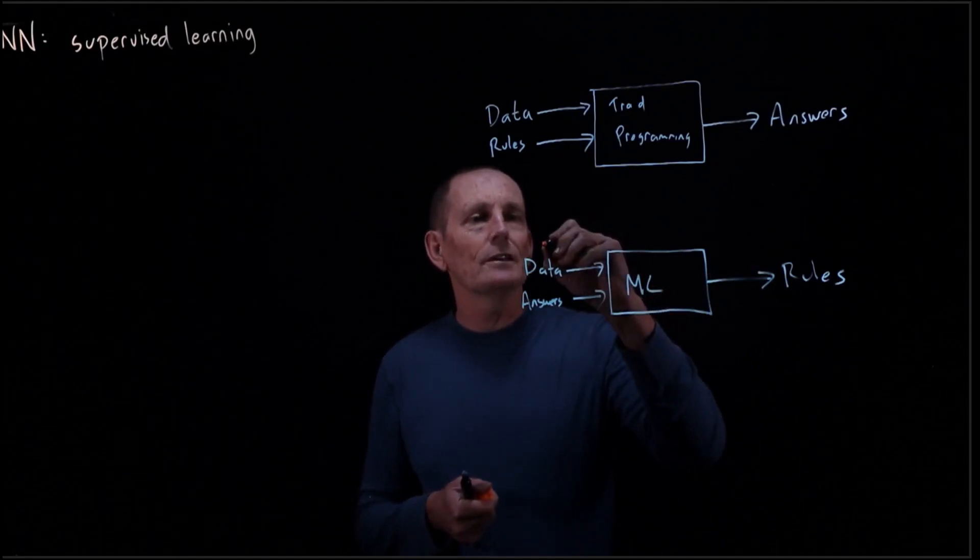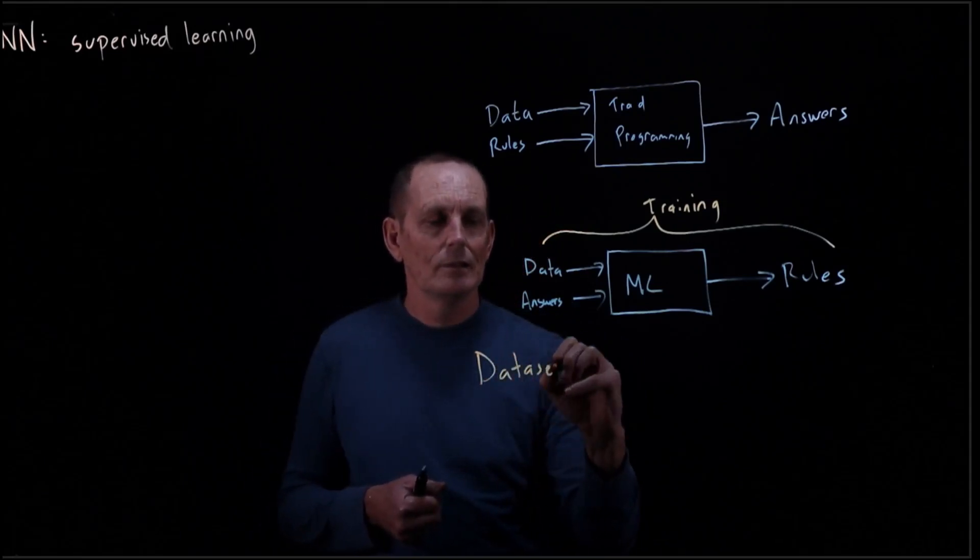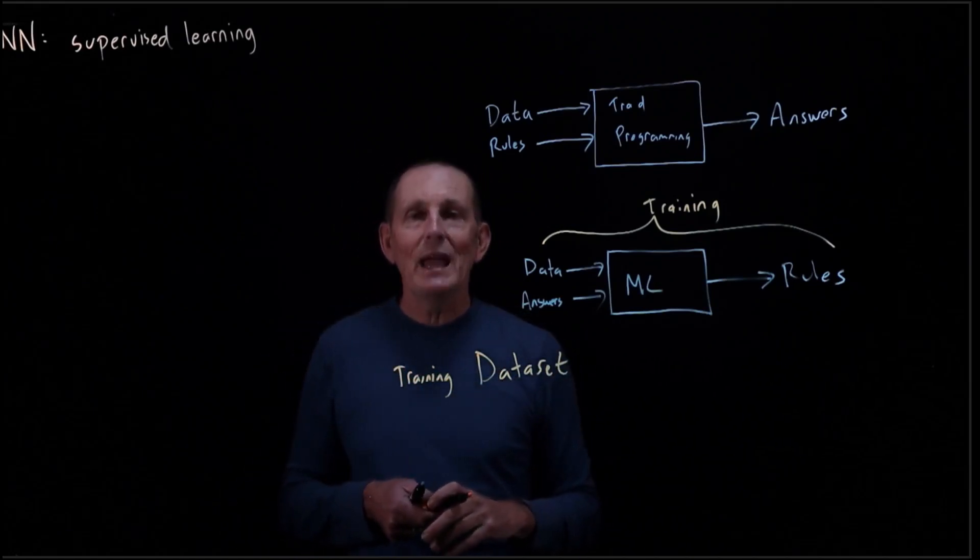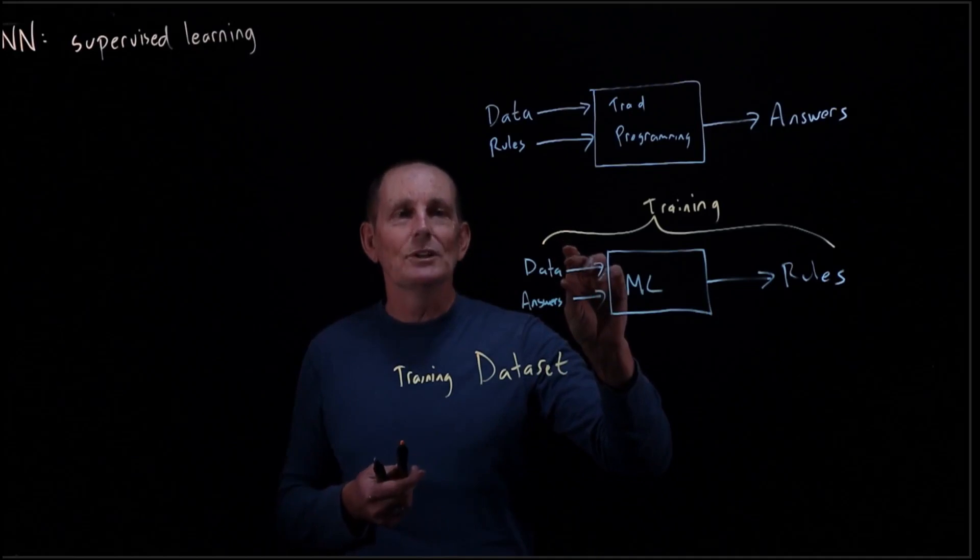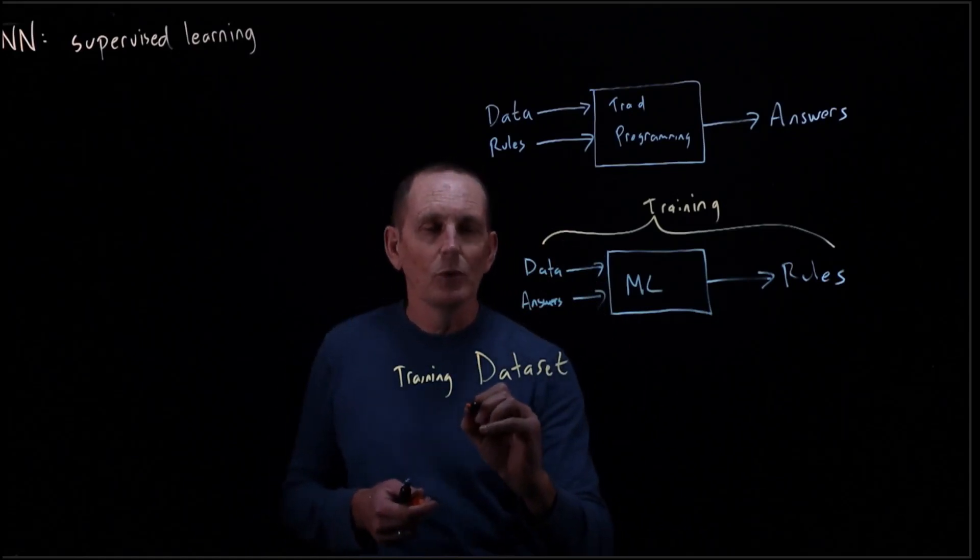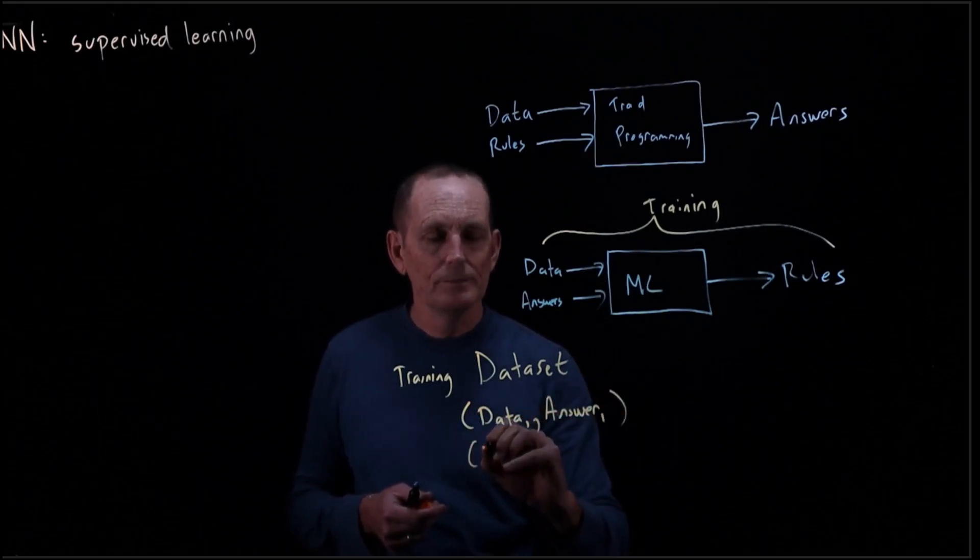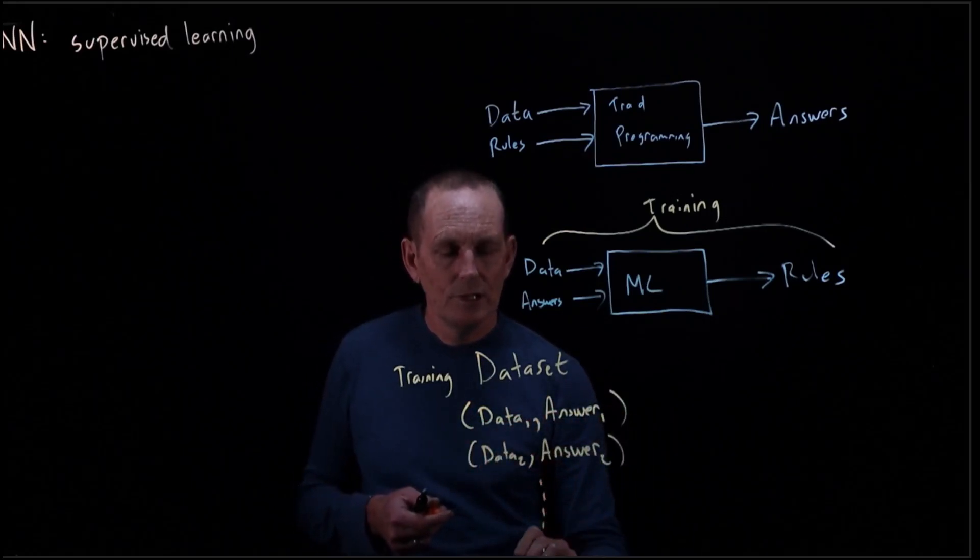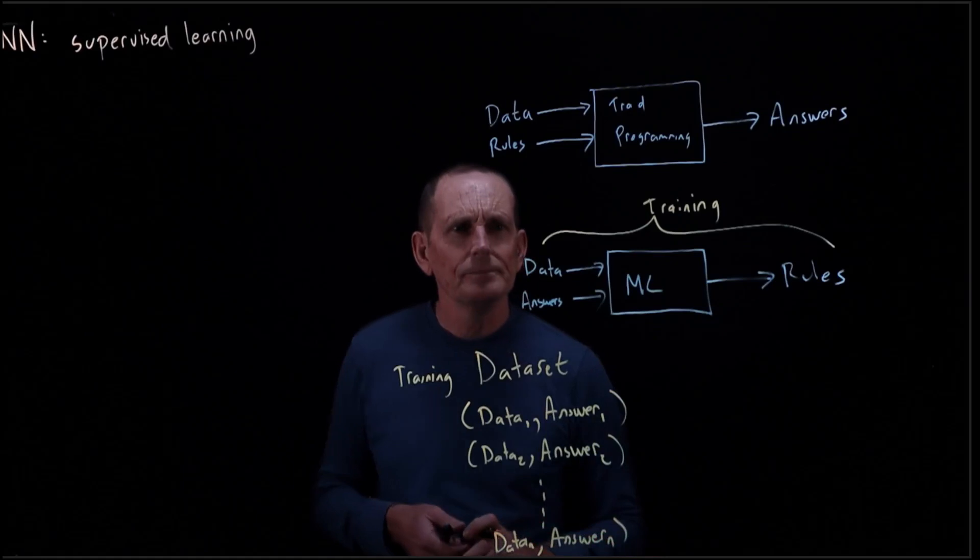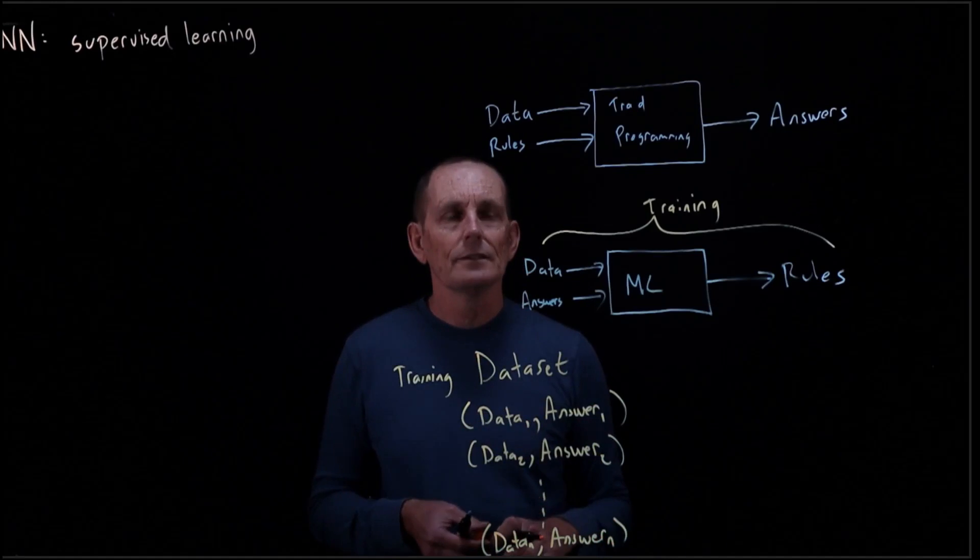Training, we take a data set, or in particular a training data set, and the training data set consists of pairs of data, that is input, and a known answer for that particular data. So we take in data 1, answer 1, data 2, answer 2, all the way to some data n, answer n. So these all are our entire training data set.